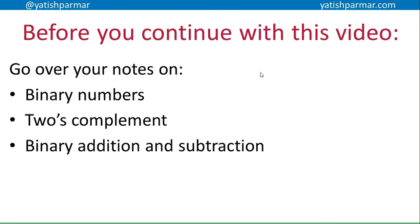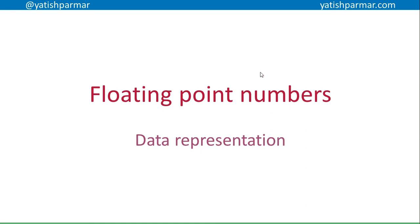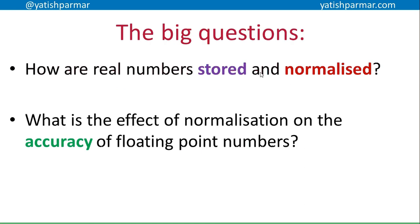It's Mr. Palmer again. Hopefully third time lucky with this one — I won't cough or sneeze my way through it. So before you go through this video, make sure you go over your notes on binary numbers, 2's complement, binary addition and subtraction. This one's about floating point numbers and looking at how a real number is stored and normalised, and what is the effect of normalisation on the accuracy of a floating point number — the magnitude of the number that can be stored, in addition to the effect on storing zero.